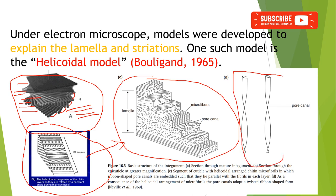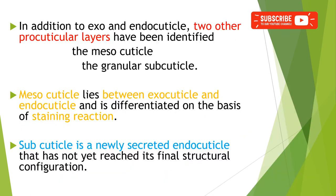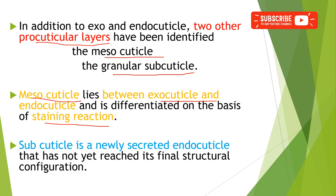The pore canals are twisted in a helicoidal or ribbon-like manner because they pass through these microfibers; due to the successive layer twisting, the pore canals are also twisted helicoidally. In addition to the exo- and endocuticle, two other procuticular layers have been identified based on their staining reactions: mesocuticle and granular subcuticle. The mesocuticle lies between the exocuticle and endocuticle, and the subcuticle is a newly secreted form of endocuticle that has not yet reached its final structural configuration.